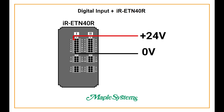In the previous video I explained how to set up the network configuration, but in this diagram I'm showing an IR ETN 40R. This is how you would wire the digital input. The 24 volts represents the input signal, so however you are sending the 24 volts, that would be wired into channel 0 on terminal 1. You could use any of the input channels on terminal 1 or terminal 2. The 0 volts would go into S0 if you're using channels 0 through 5; if you're using 6 through 11, it would go into S1, and the same for terminal 2.